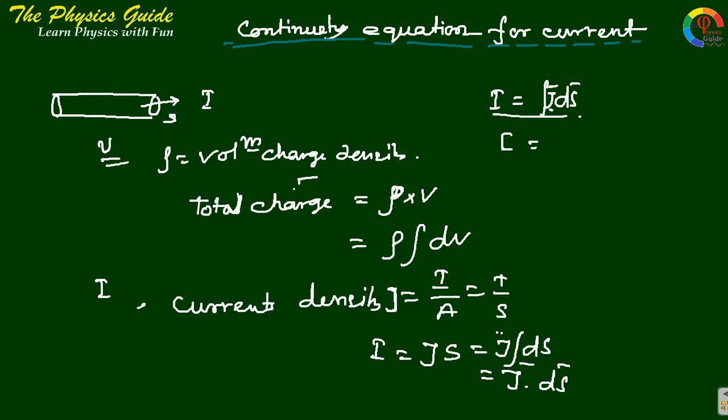We get I = ∫J·dS. Again, I equals Q by T, or more precisely I equals dQ/dt.